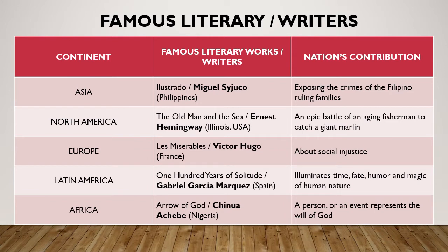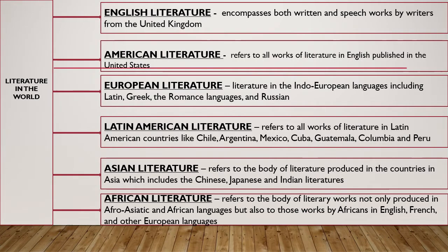As your Task 2, create a similar table or grid from page 3 of module 1 and fill it out with the necessary data as shown by the example. As shown by the table in Task 2, we are now into literature among continents of the world. Different writers from these continents offer varied and rich human nature experiences which lead us to discern larger truths and ideas in the society where we belong. Now let's have a glimpse at each continent's literature.